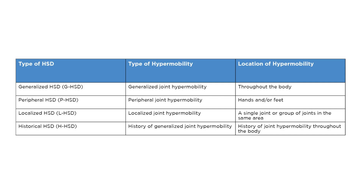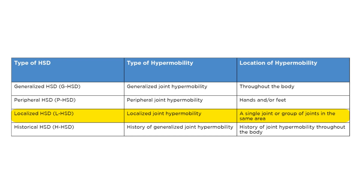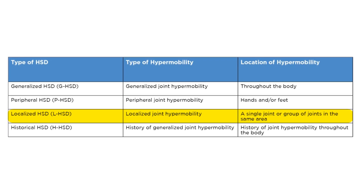Similarly, for localized hypermobility, it may just be localized hypermobility — asymptomatic, not causing any problems. But if it is symptomatic, we would call it a localized hypermobility spectrum disorder. We use the term disorder to indicate that the hypermobility is associated with symptoms.